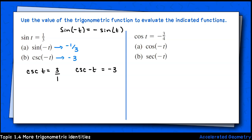Again, for odd functions, the output of opposite inputs will be opposites. Alright, let's move on to the right. We have cos(t) = -3/4. For part a, we're asked to find cos(-t). Cosine is an even function, so the output for opposite inputs will be equal. cos(-t) is still -3/4.